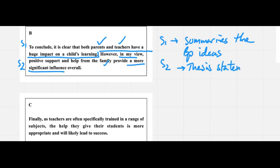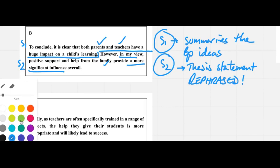Sentence number two says 'in my view, positive support and help from the family provide a more significant influence overall.' So we have this expression 'a more significant influence.' This is the thesis statement, but it's not exactly the same as what the thesis statement is. In this particular example, it's actually rephrased, and that matters. A good conclusion like this one should have two sentences where the first sentence summarizes the body paragraph ideas. The second sentence goes back to the thesis statement, and if you remember that comes from the introduction. So this one, let's give it a good green tick.